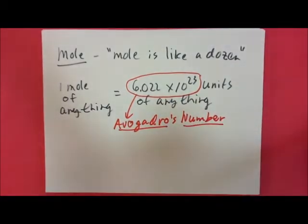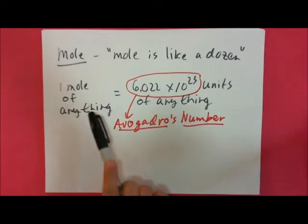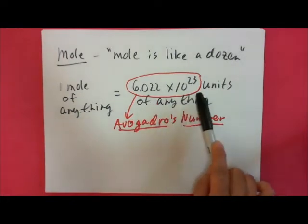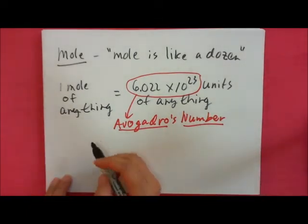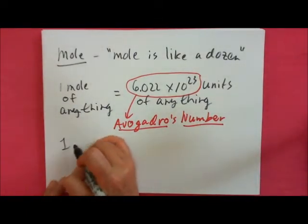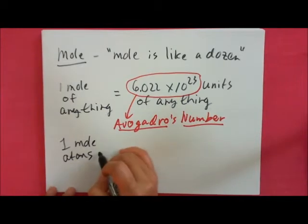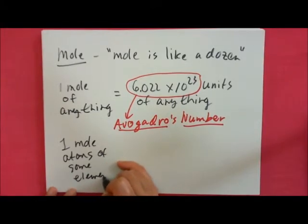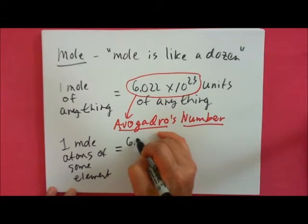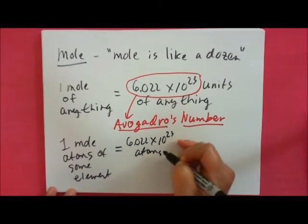Avogadro is one of those long-dead scientists, so it's named after a guy named Avogadro. The equation says one mole of anything is equal to 6.022 times 10 to the 23rd units of anything. For example, if you have one mole of atoms of some given element, then you have 6.022 times 10 to the 23rd atoms of that element.